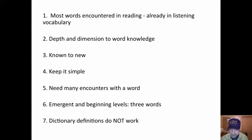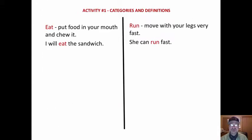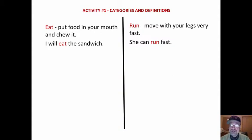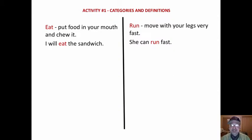Dictionary definitions do not work — having children look up words in the dictionary. Activity number one is called categories and definitions. You start with two target words, and you give a kid definition using kid language. This is where you need your teacher knowledge, putting these definitions in words that kids can understand.